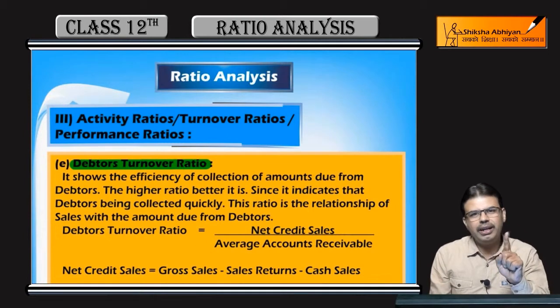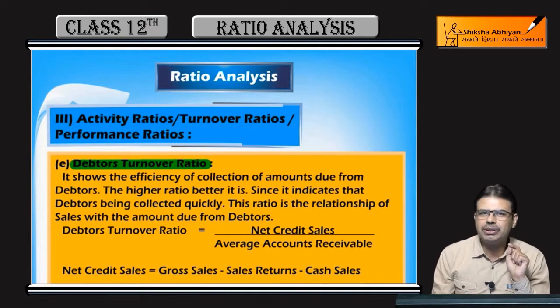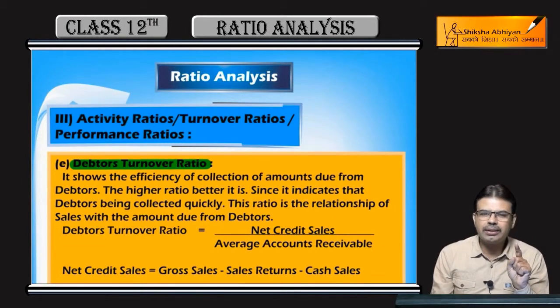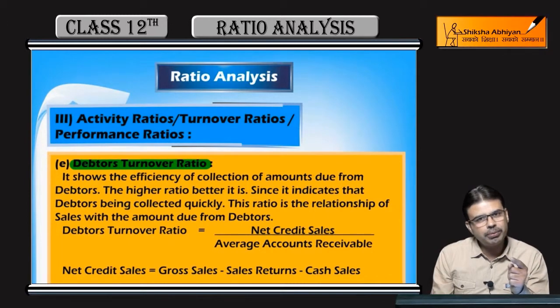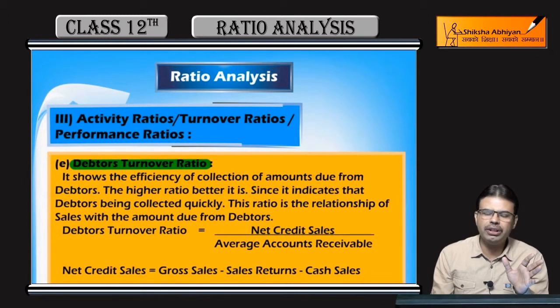That means one month is the collection period. If someone has 24 times, it means they are collecting their debtors 24 times — that means every 15 days on average they have a collection.